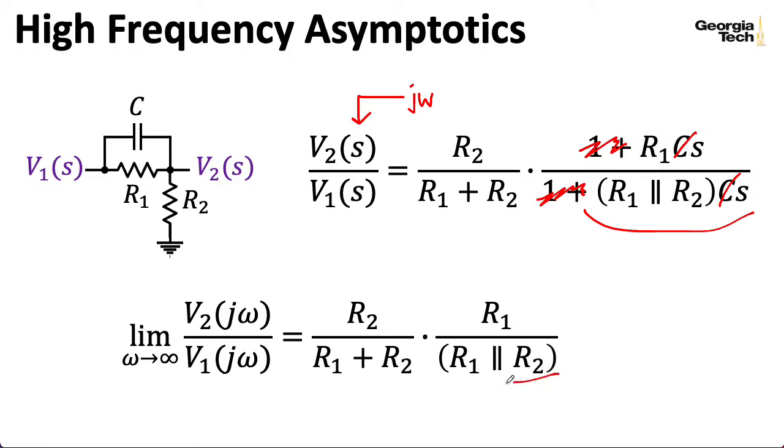Well, let me think about what R1 in parallel with R2 is. Well, it looks like R2 times R1 over R1 plus R2. So this actually is a parallel combination, R1 in parallel with R2. So these wind up canceling, and I wind up with 1.